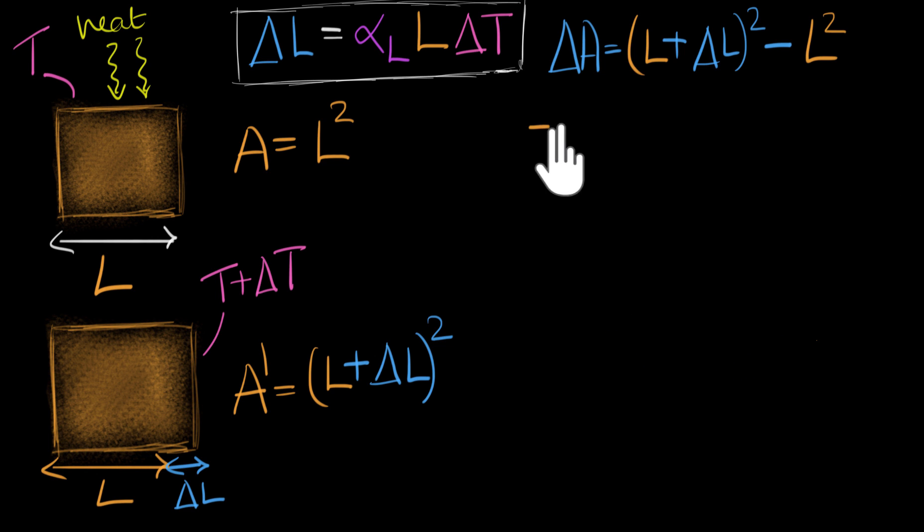All right, let's do it. So what can we do next? Well, we have an A plus B whole square form. Let's expand that. It'll be A squared plus B squared plus 2AB. So if you expand this, you'll get A squared plus B squared plus 2AB minus L squared. And notice this cancels.